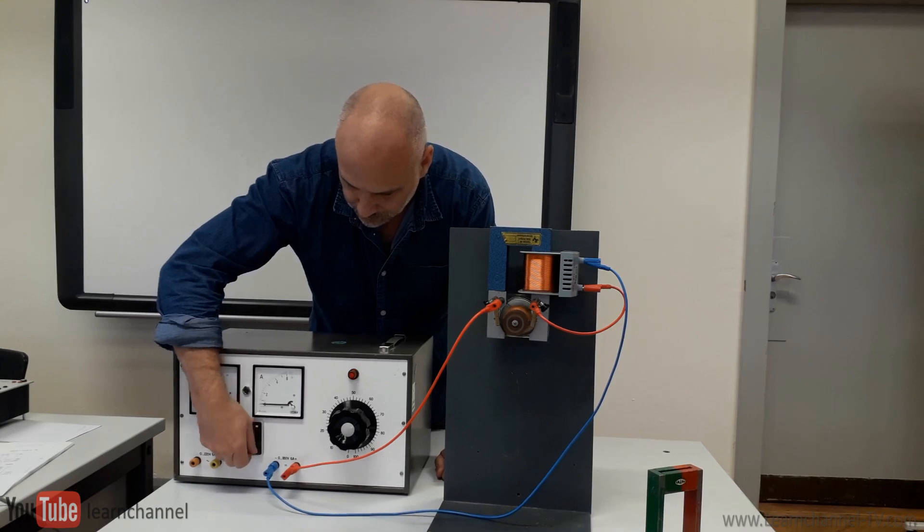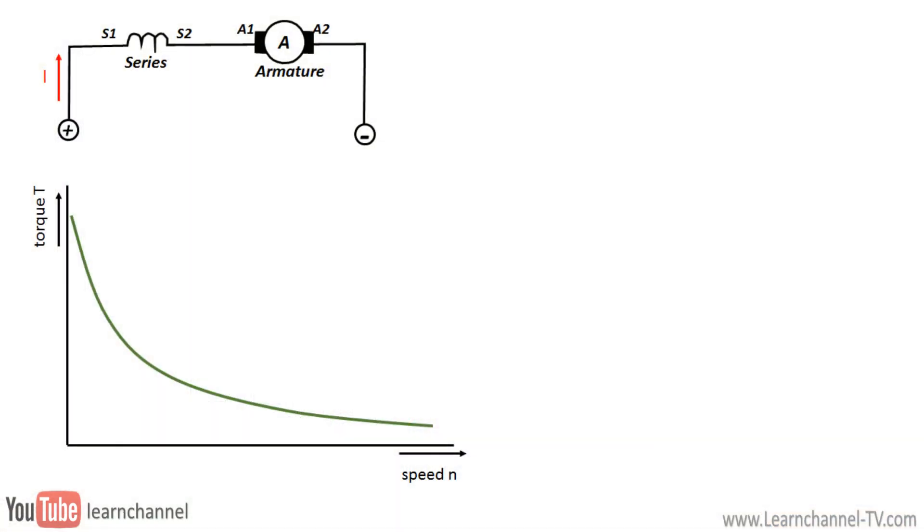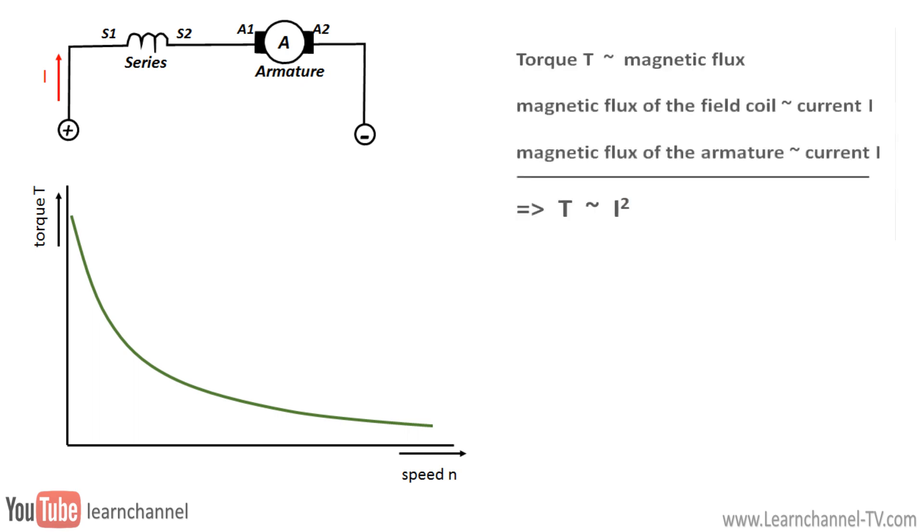Series DC motors have an extremely high starting torque, but why? At the starting point, you have a high current, because the current at this point is only limited by the ohmic resistance of both the armature and the field coil. As a result, both winding can generate a strong magnetic field.